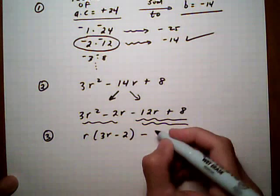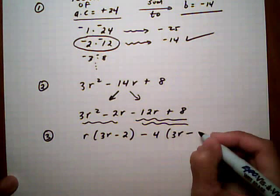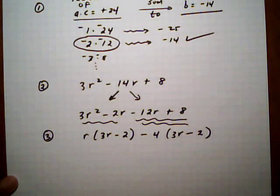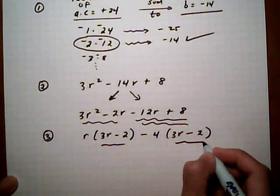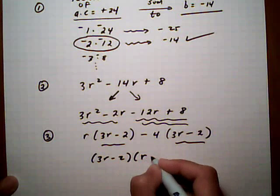They both have a 4 times 3r minus 2. Then take out the common binomial factor of 3r minus 2, r minus 4.